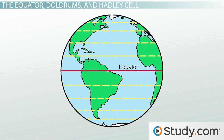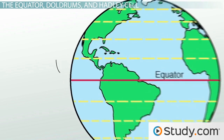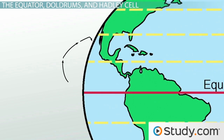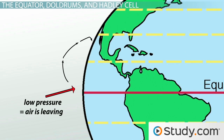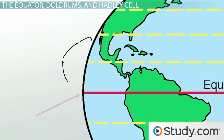Starting along the equator, the air is very warm here, so it rises straight up. When warm air rises like this, it leaves behind an area of low pressure. You can remember this because the air is leaving, which creates an area of low pressure — leaving and low both begin with L. This particular area of low pressure along the equator is where we find our doldrums: a long stretch of stagnant air and our first windless strip between cells.